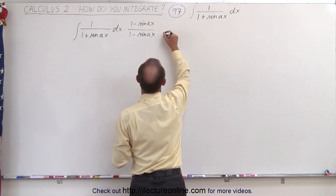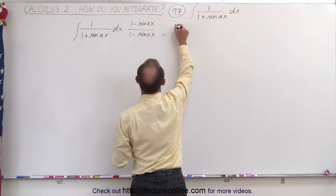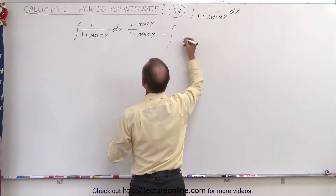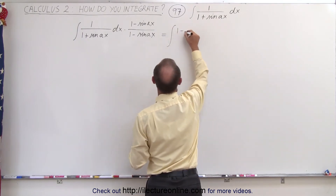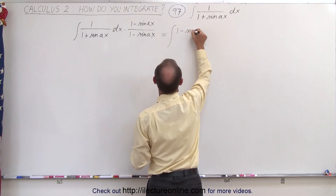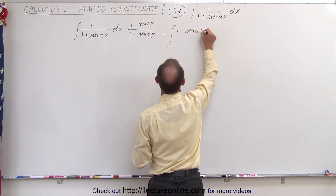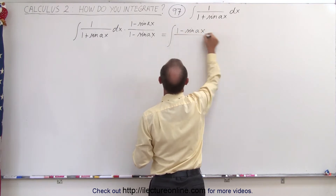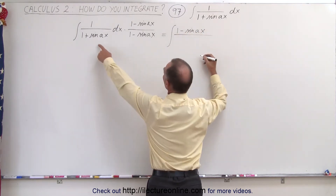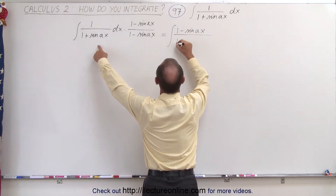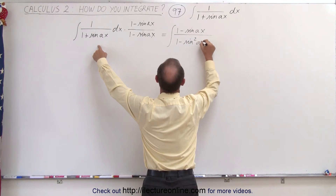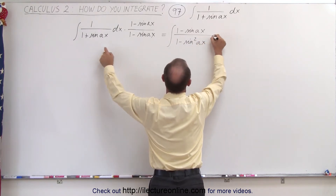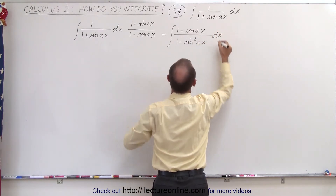So this becomes equal to the integral where in the numerator we end up with 1 minus the sine of Ax, and in the denominator this becomes 1 minus the sine squared of Ax, and we still have our dx.